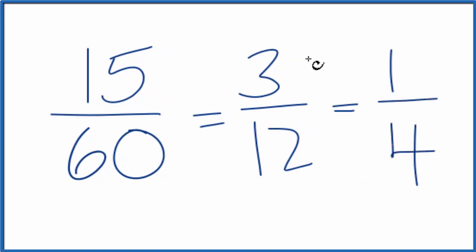If you divide 15 by 60, 3 by 12, or 1 by 4, you'll get the same number, 0.25, because they're equivalent fractions. This is Dr. B, thanks for watching.